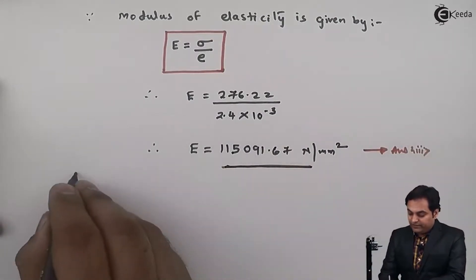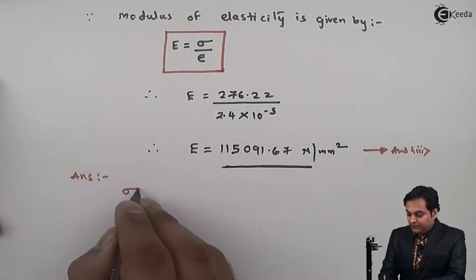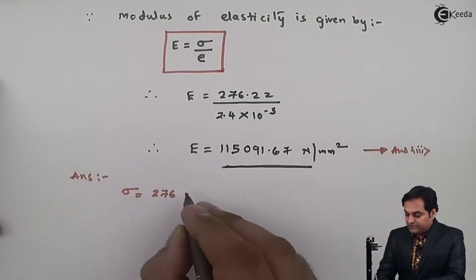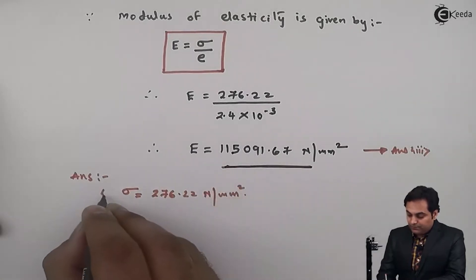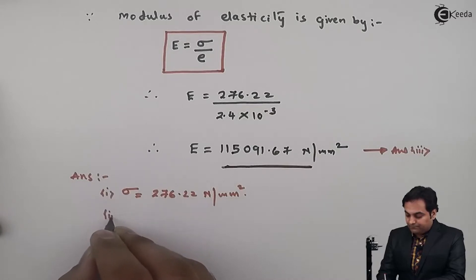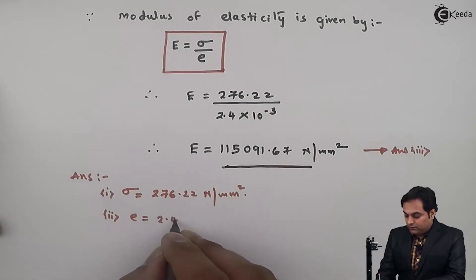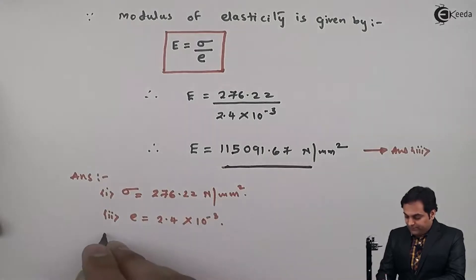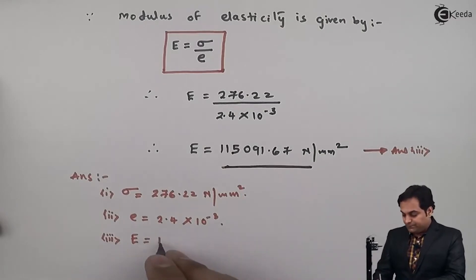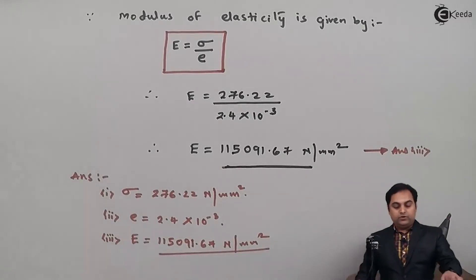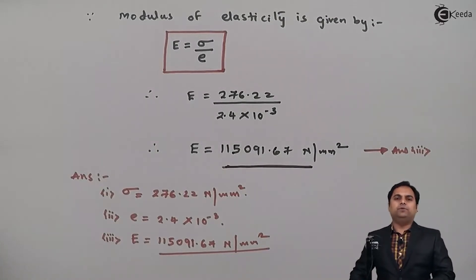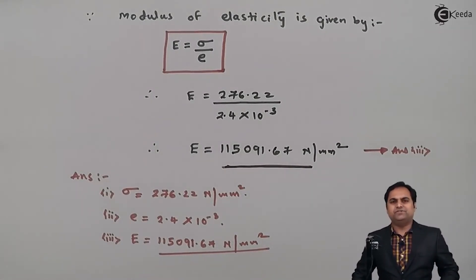To summarize the answers: stress is 276.22 N/mm²; strain is 2.4 × 10⁻³ (dimensionless); and Young's modulus is 115,091.67 N/mm². We have now completed the problem and calculated all the unknown values.